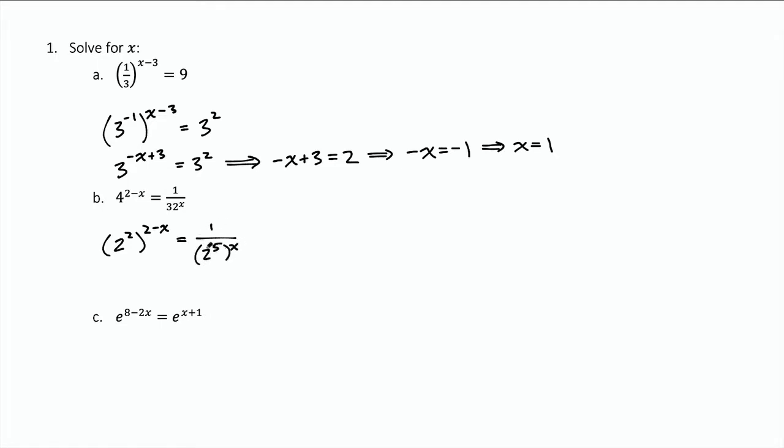Now this isn't quite what I want because I'd like it just as a base of two. I don't want one over that. So I know I can do that by using a negative exponent. So this becomes two to the negative five x. Now on the left side of the equation, if I multiply those exponents, I get four minus two x. So now I've got the same base on the left and on the right.